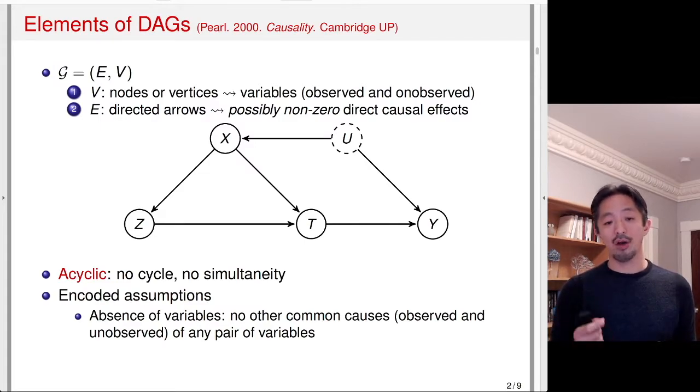that variable that you omit cannot affect other variables. If there's another variable that's affecting both X and Z, for example, then you should be including it. The absence of those variables means there's no other common causes of any pair of variables that's not written in this graph.